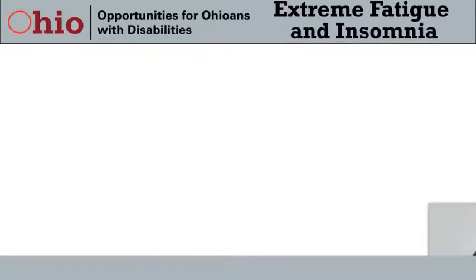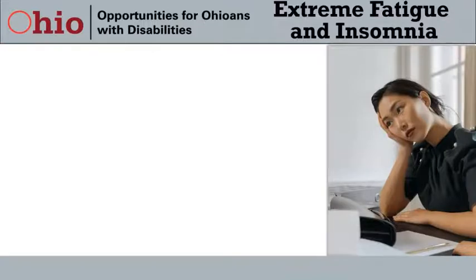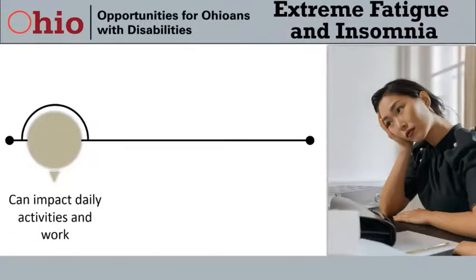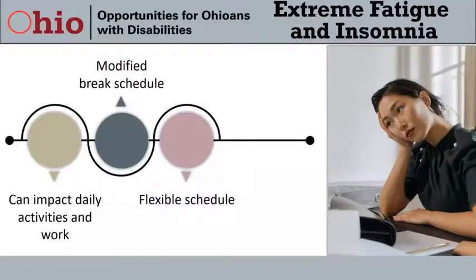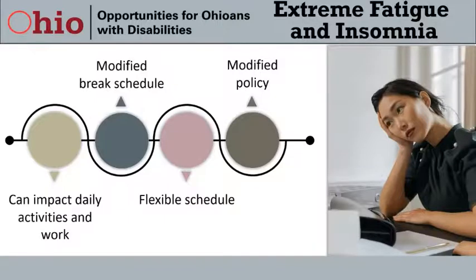Extreme fatigue can impact an individual's ability to perform daily activities including work, while insomnia is a disruption in sleep whether in falling asleep, staying asleep, or waking up early. Accommodations for these two effects can be similar and include permitting a modified break schedule so the employee can take breaks as needed from physical or mental exertion, providing a flexible schedule so the person can work when their energy is most optimal, and modifying a no food or drink at the workstation policy so an employee can keep a cold drink at the workstation.